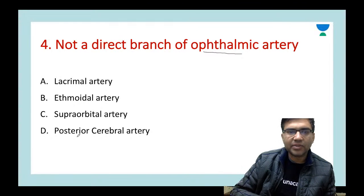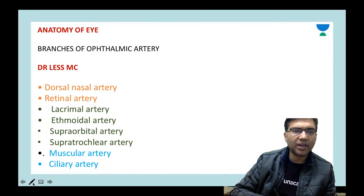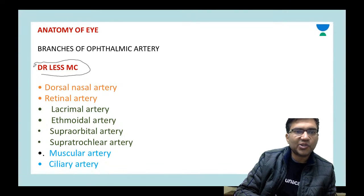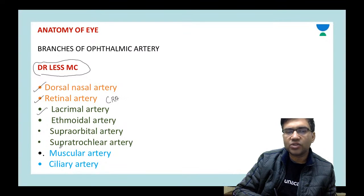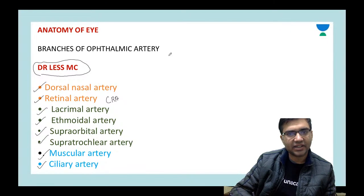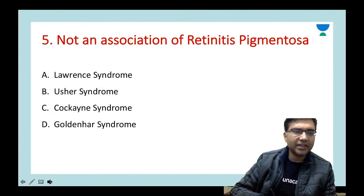Next question: which is NOT a direct branch of the ophthalmic artery? The answer is D — posterior cerebral artery. You can remember the mnemonic 'Dr Less MC': D = dorsal nasal artery, R = retinal (central retinal) artery, L = lacrimal artery, E = ethmoidal artery, S = supraorbital and supratrochlear artery, M = muscular artery, C = ciliary artery. This was asked in the PGI exam and has a high probability of being asked again.